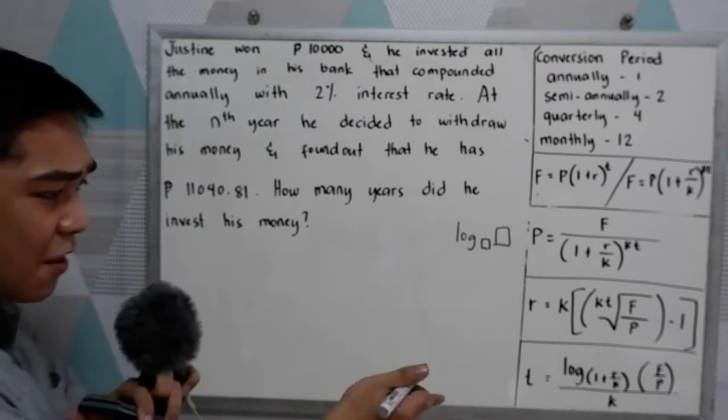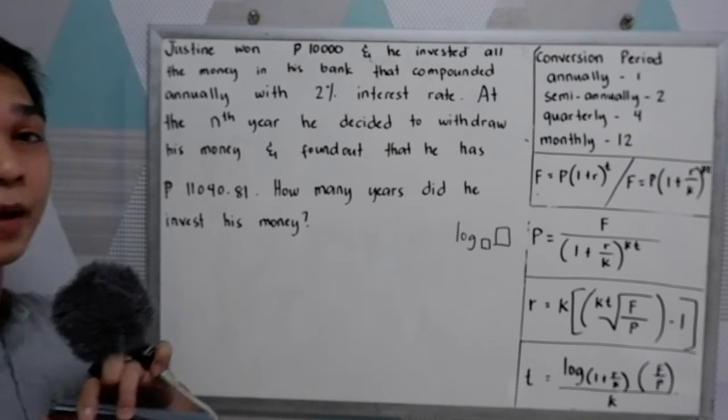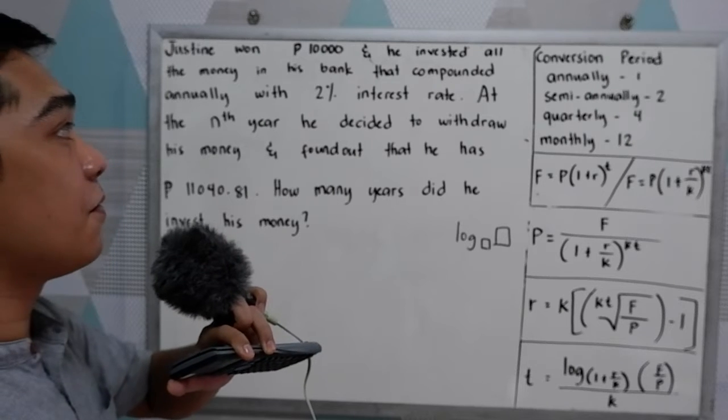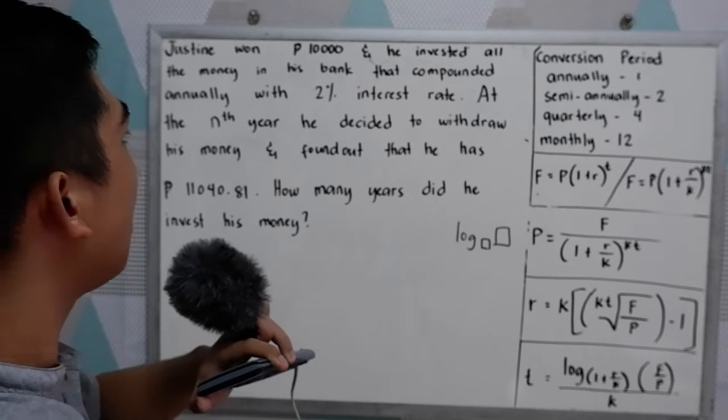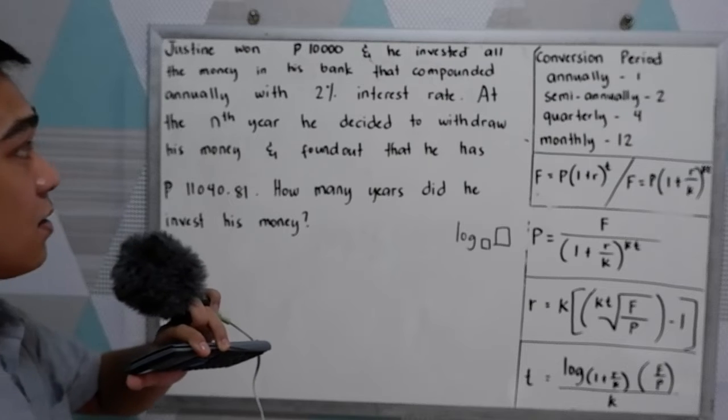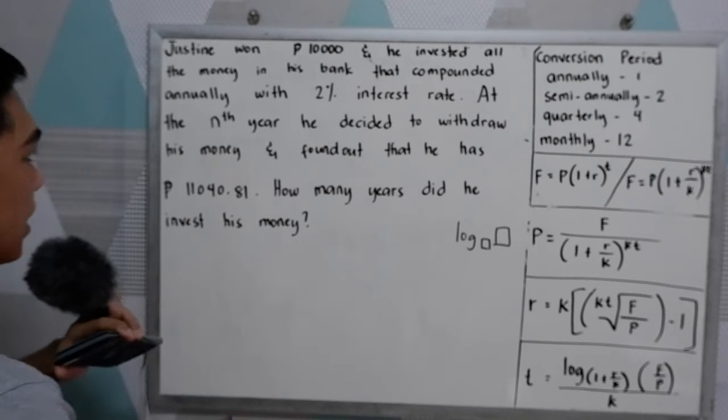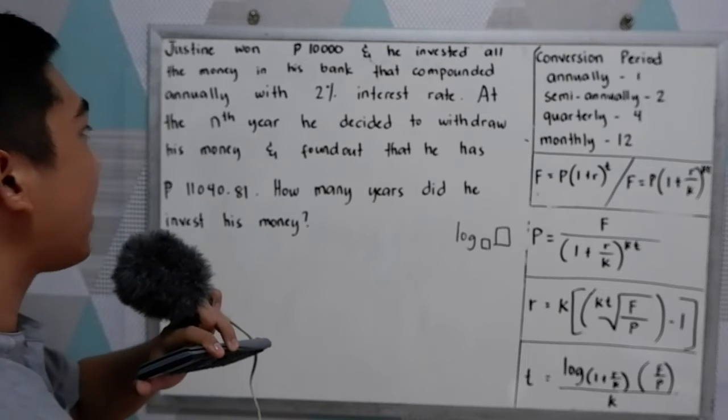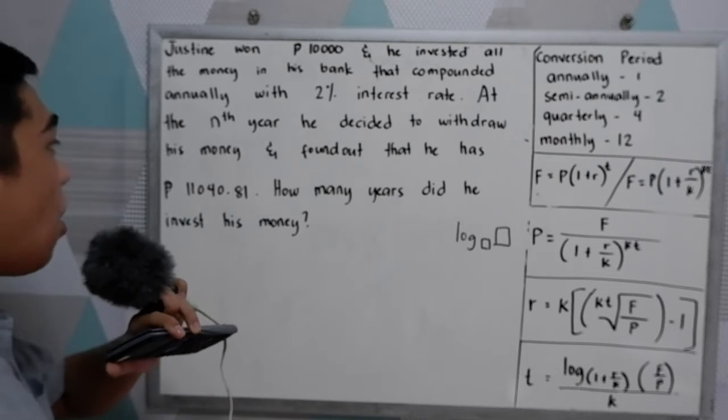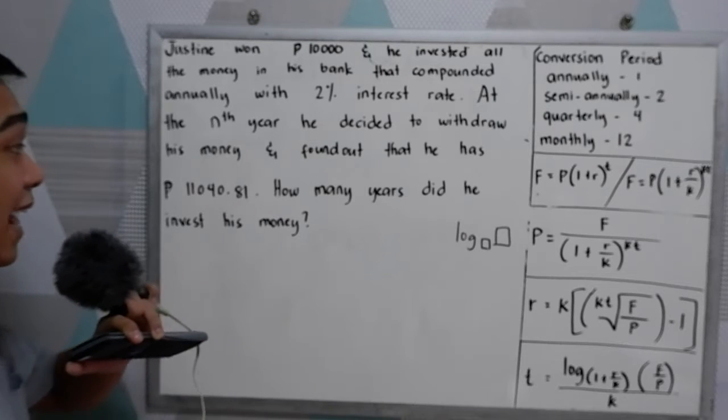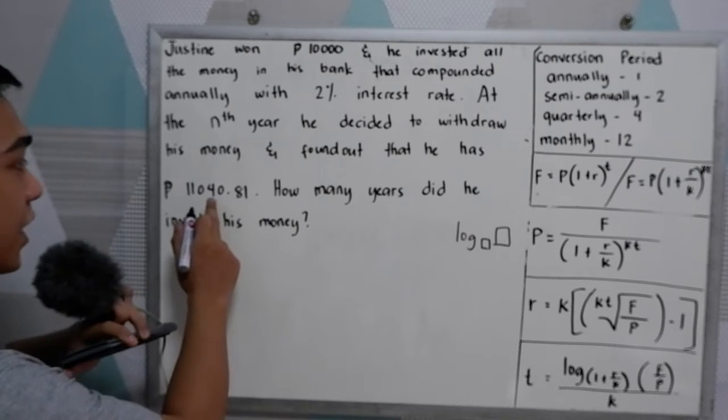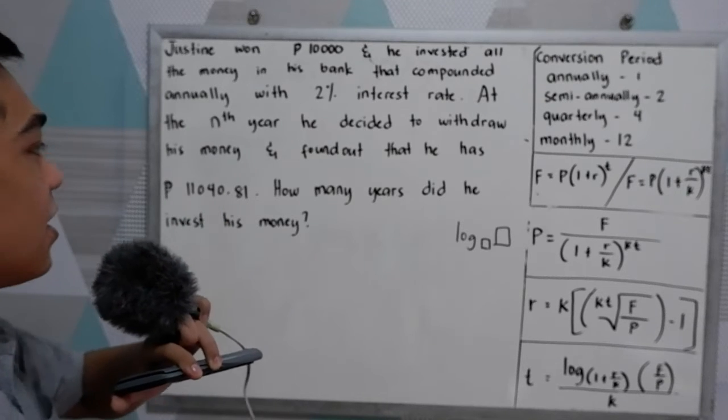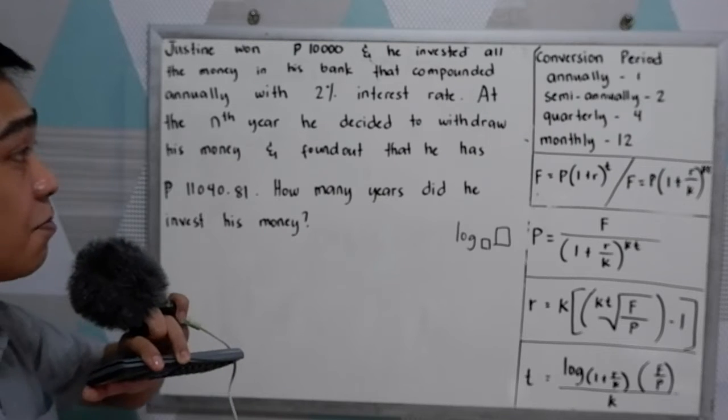Now let us apply that formula. We have this problem. Justin won 10,000 pesos and he invested all the money in his bank that compounded annually with 2% interest rate. At the end year, he decided to withdraw all his money and found out that he has 11,040.81 pesos. How many years did he invest his money?